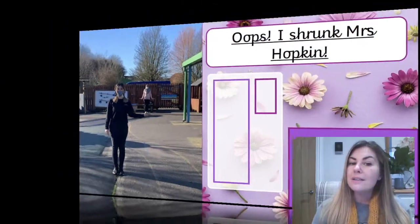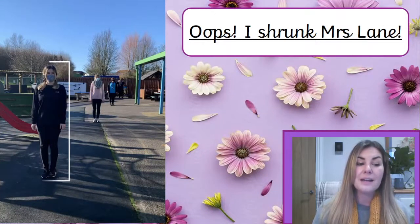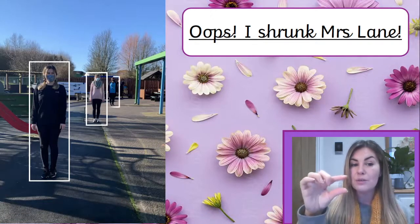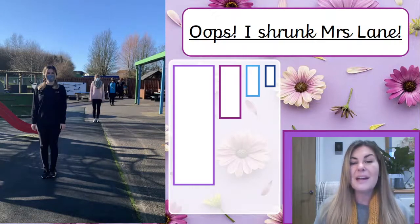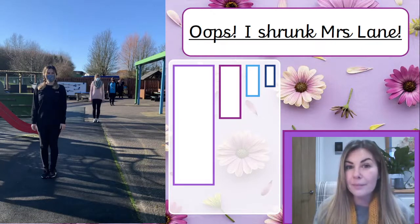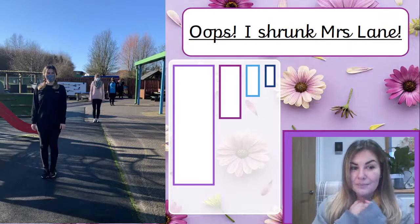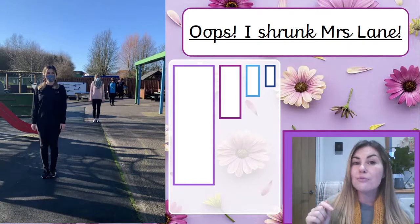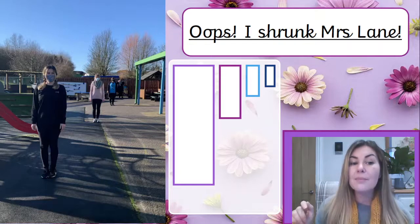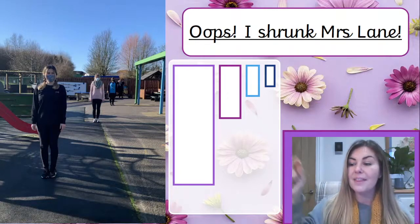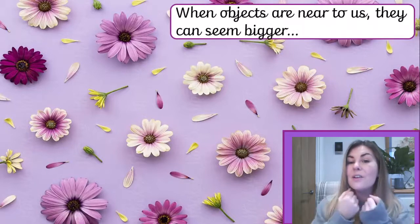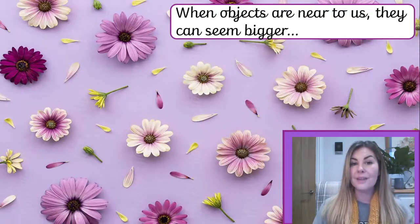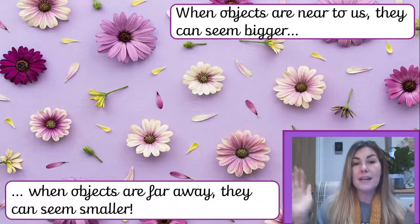Now I also shrunk Mrs. Rodigan and Mrs. Lane. So I am now the biggest, Mrs. Hopkin is small, Mrs. Rodigan is smaller, and Mrs. Lane is the smallest. But that's not really what happened — I didn't really shrink them. I am standing close to the camera, Mrs. Hopkin is standing further away, Mrs. Rodigan is standing even further, and Mrs. Lane is standing the furthest. That's why Mrs. Lane looks really small and I look really big. What we've learnt is when objects are near to us, they seem bigger, and when objects are far away, they seem smaller.